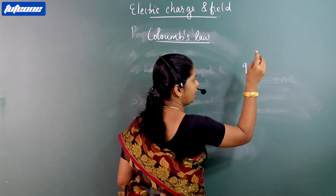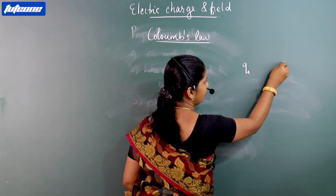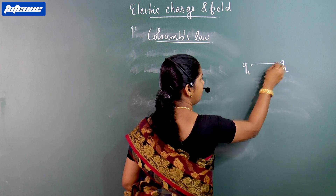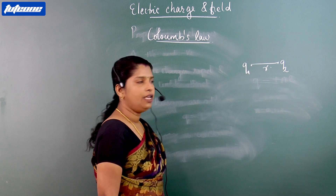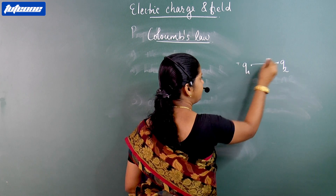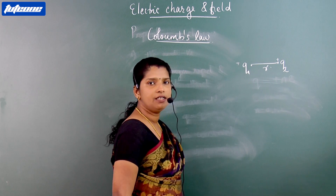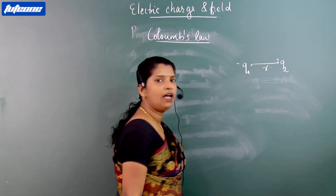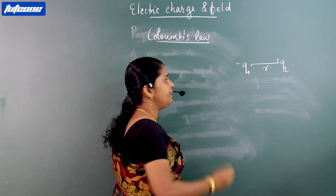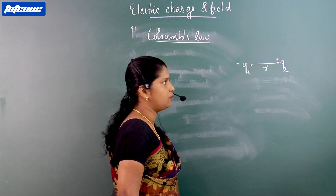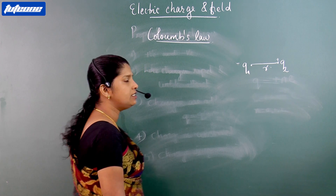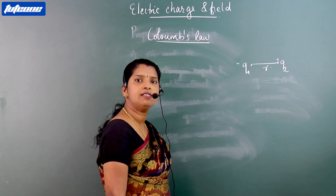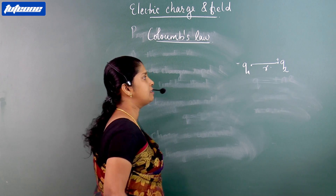Here we have two charges, Q1 and Q2, separated by a distance R. If these are two positive charges, then there is a repulsive force. If this is a negative and positive charge, then there is an attractive force. So if two charges are separated by a distance, there is always an attractive or repulsive force.